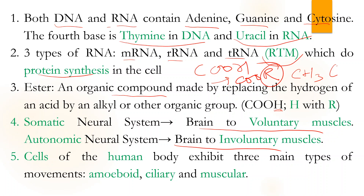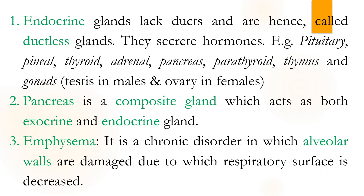Human body cells have three types of movement: one is amoeboid, second is ciliary, and third is muscular. Endocrine glands lack ducts.